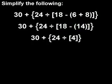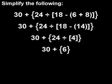Next, we move out to the braces. 24 divided by 4 is 6. So we're left with 30 plus 6, which is 36.